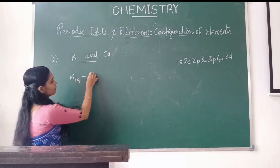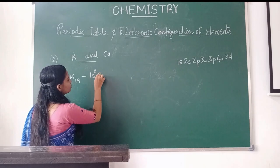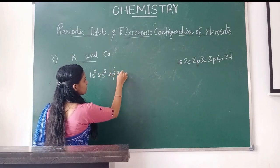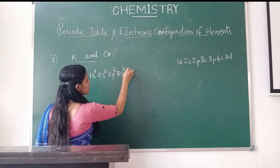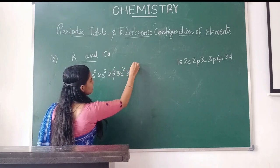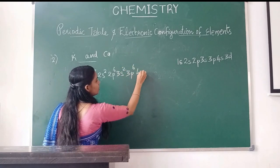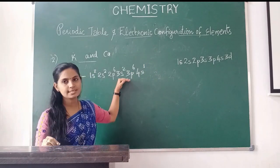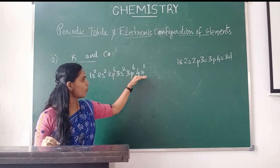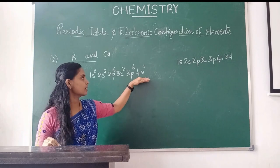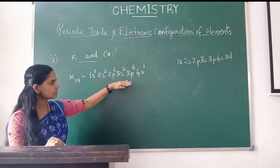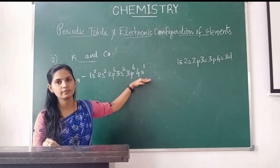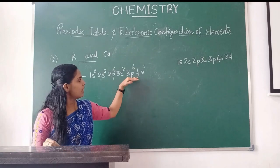Electronic configuration of potassium: 1s2, 2s2, 2p6, 3s2, 3p6, 4s1. After 3p6, the next electron goes into 4s rather than 3d.